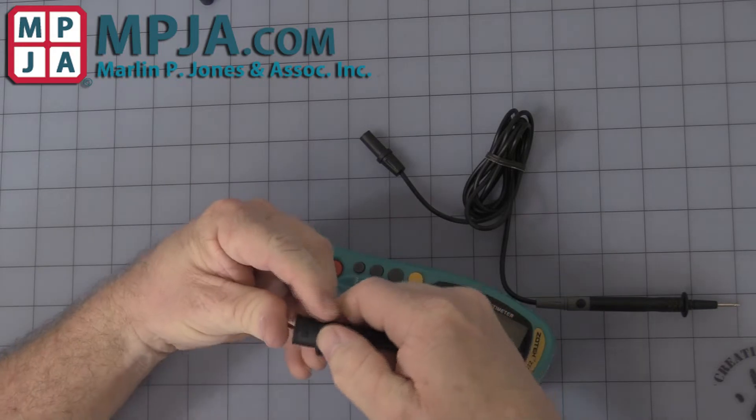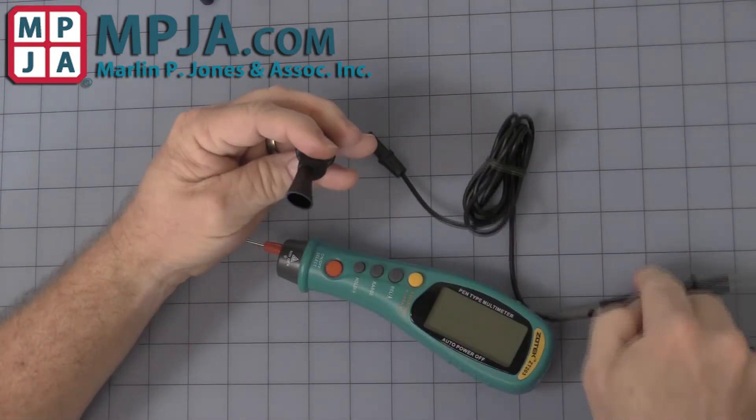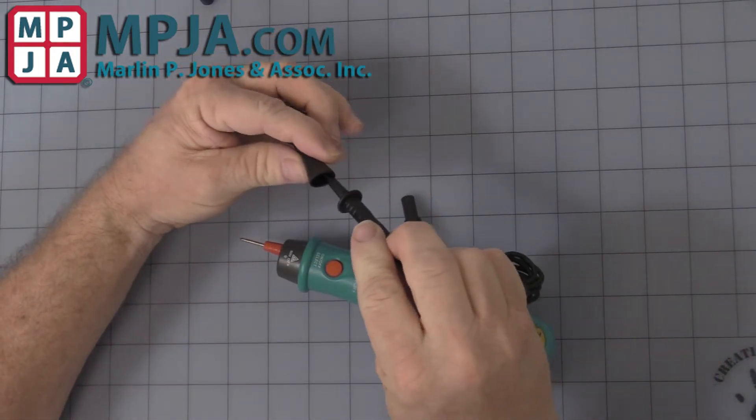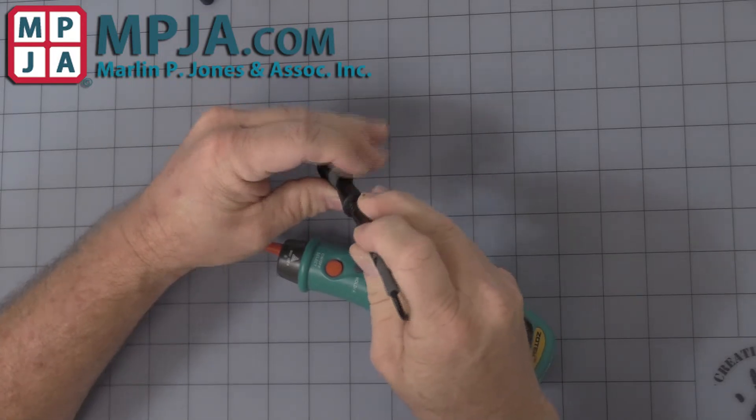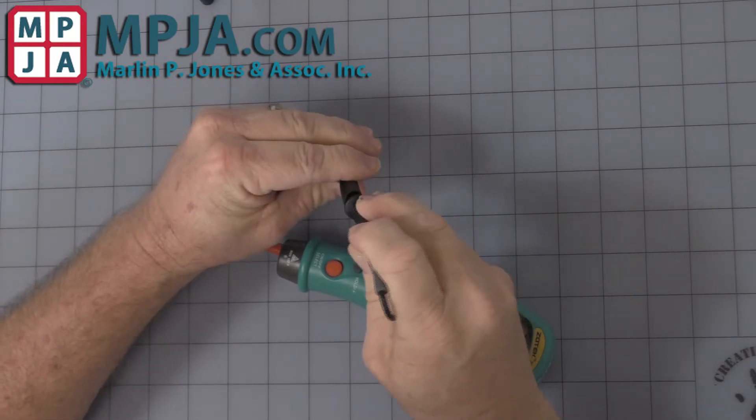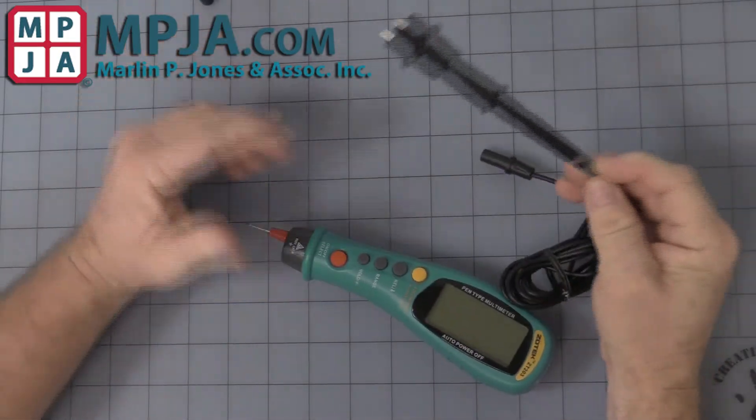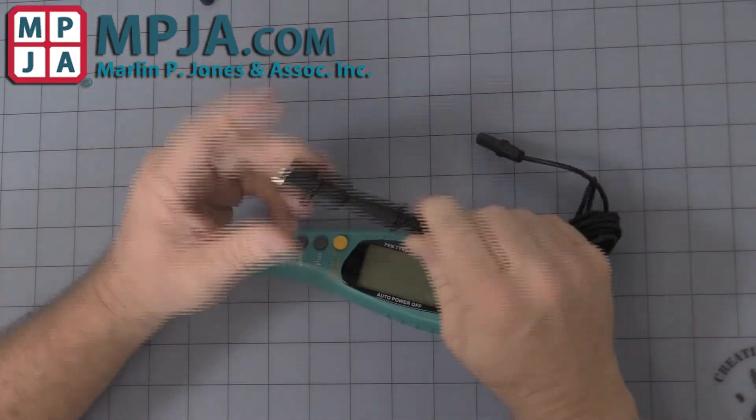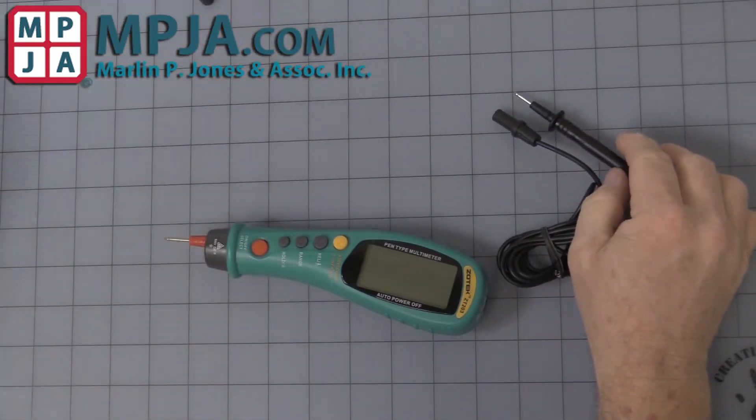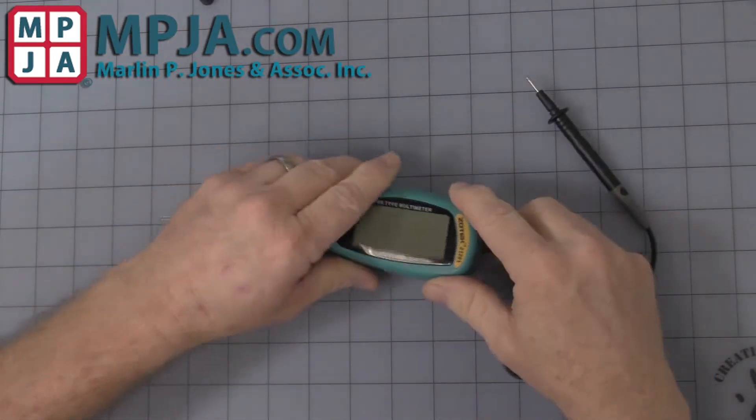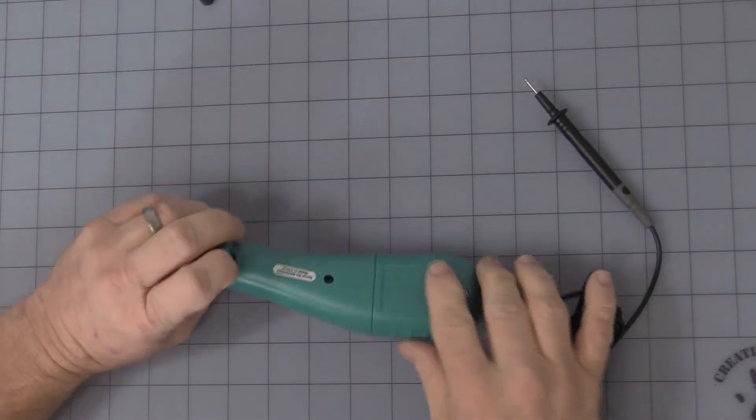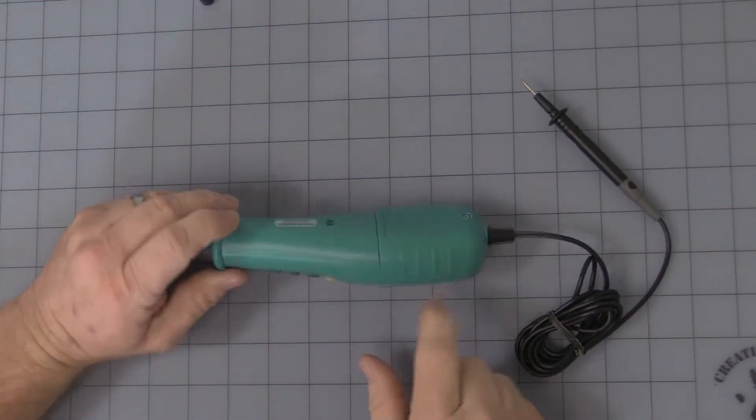So you can hook that up to your negative probe, hook it up and clip it off somewhere for you if you need to. It plugs into the back end of it. I have already installed batteries so you don't have to see me do that, it's just a little Phillips screw.